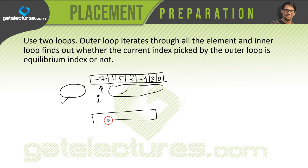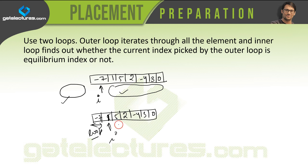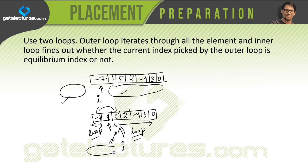So we increment i and move to the next position. If i is at a particular index, we run a loop to find the sum of all elements to the left, and another loop to find the sum of all elements to the right. If the sum is equal, we stop and return the index location i. If the sums are not equal, we increment the value of i and repeat the process — finding left sum, finding right sum, and comparing them. This is the first and easiest solution.